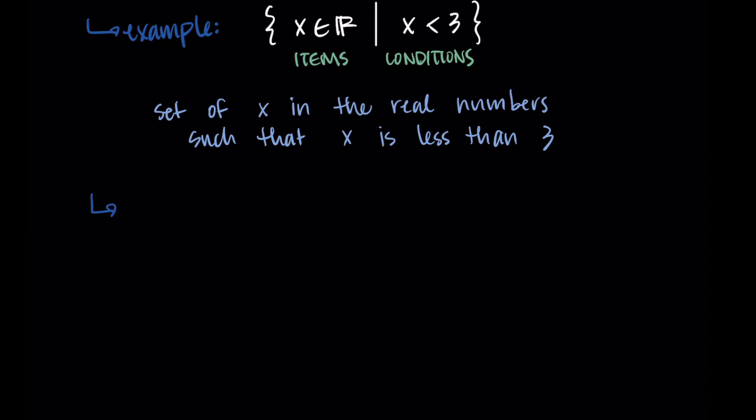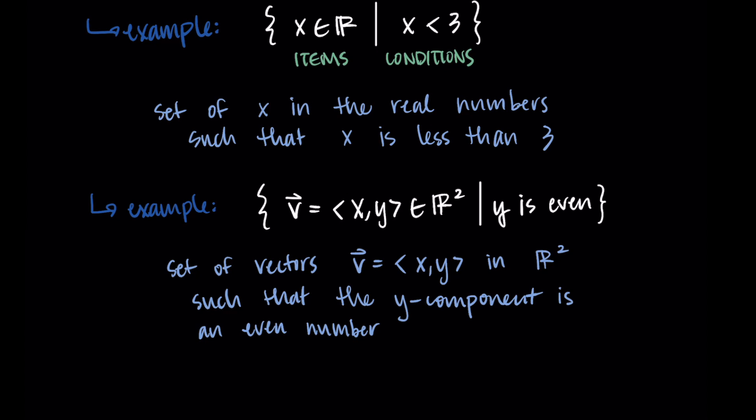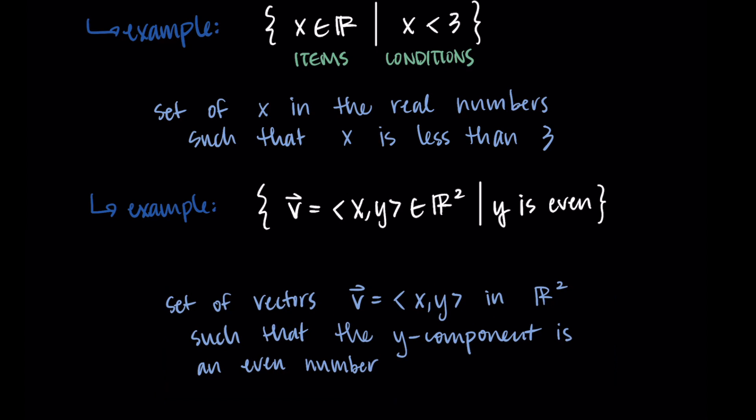A potentially more complicated example might look something like the set of vectors v, which are equal to (x, y) that are in ℝ² such that the y component is even. It's an even number. So again, we put the items on the left hand side and then we put the condition corresponding to those items on the right. So we're looking at all the vectors in ℝ² such that they have a second component that's even. And so it's just good to get a little bit of practice and fluency with this set notation. It's maybe something you've seen before, but we're going to start using it more regularly as we start working more with vectors as part of linear algebra.